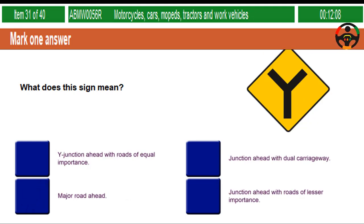What does this sign mean? Y junction ahead with roads of equal importance. Junction ahead with dual carriageway. Major road ahead. Junction ahead with roads of lesser importance.